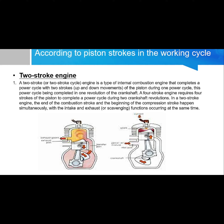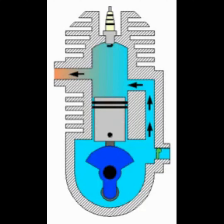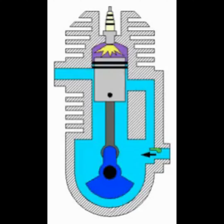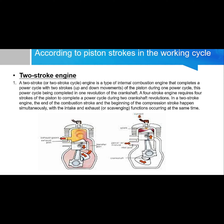A two-stroke engine is a type of internal combustion engine that completes a power cycle with two strokes of the piston during one crankshaft revolution. A four-stroke engine requires four strokes of the piston to complete a power cycle during two crankshaft revolutions. In a two-stroke engine, the end of the combustion stroke and the beginning of the compression stroke happen simultaneously, with the intake and exhaust functions occurring at the same time.